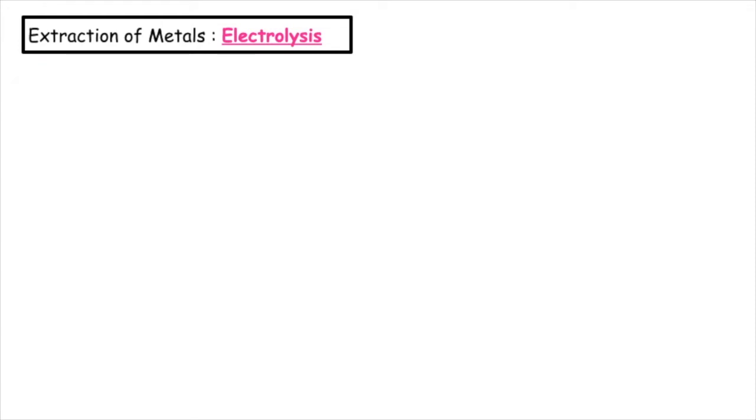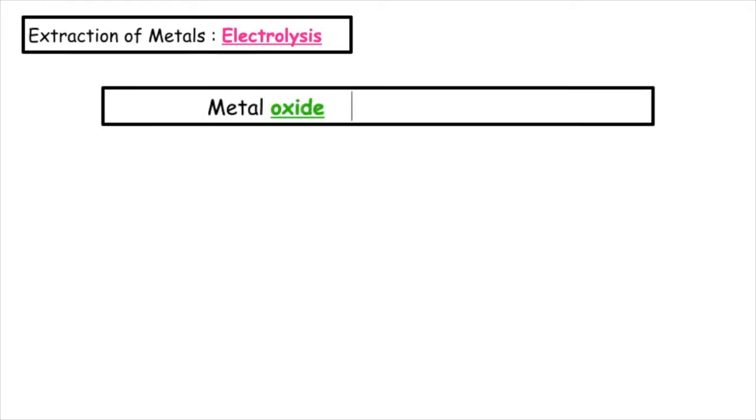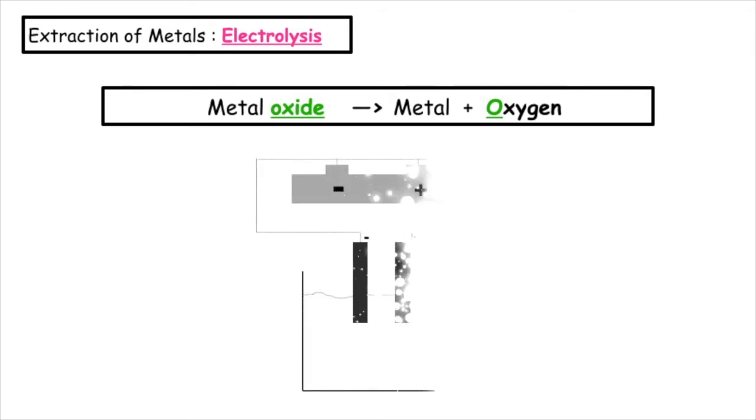So how does electrolysis actually work? We already know that the metal oxide breaks up to form the metal atom and oxygen gas. To do this, we have to dissolve the metal oxide, in this case potassium oxide, in water to form an ionic solution. We then set up a circuit using a battery, some leads, and some carbon electrodes.